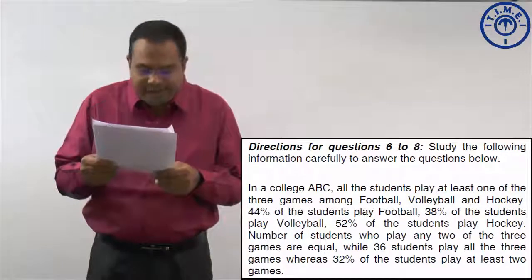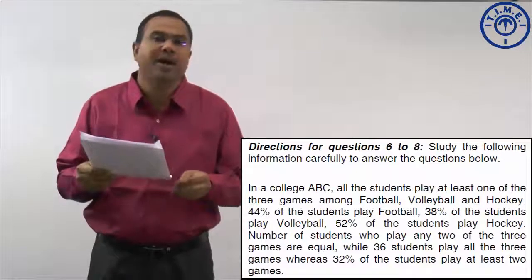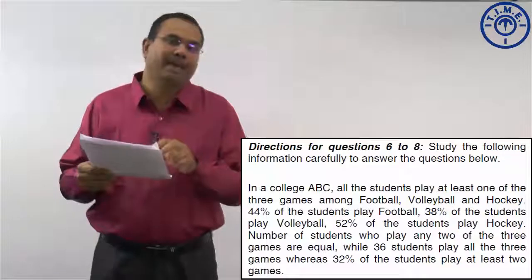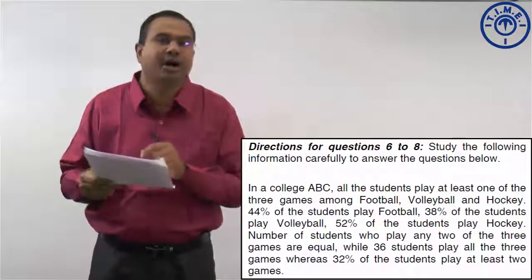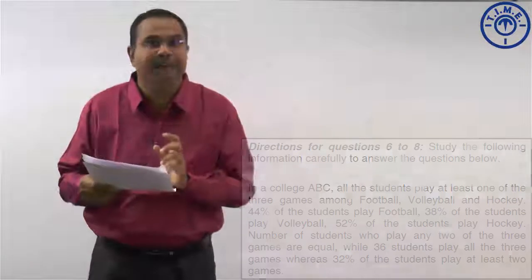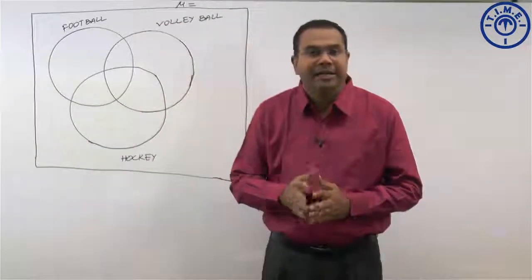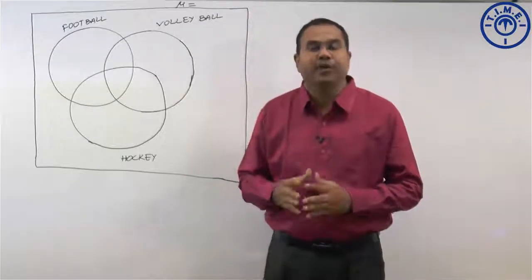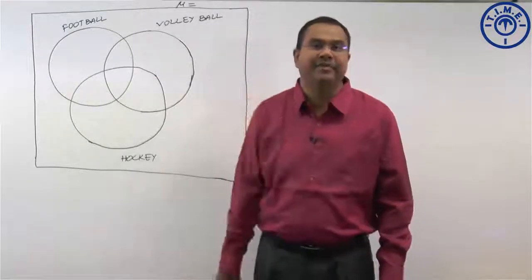We have three games: football, volleyball and hockey. First, let us represent the given information in the form of a Venn diagram, then we can look at solving the questions. Let us represent the given data in this Venn diagram. Before we represent, let us understand the given Venn diagram.